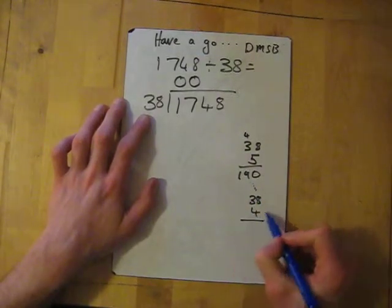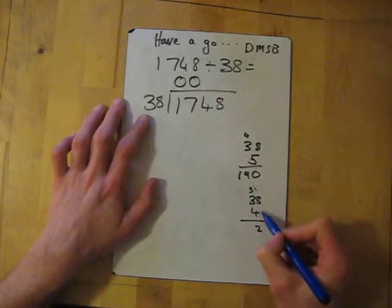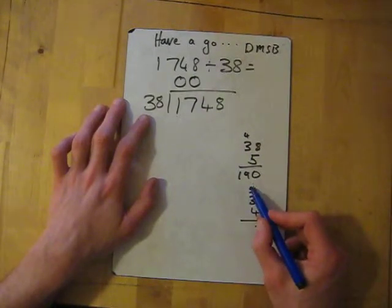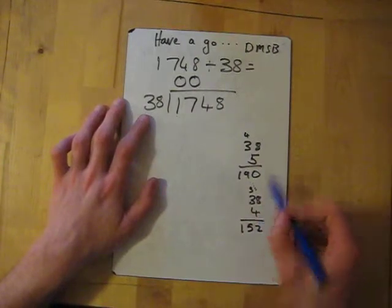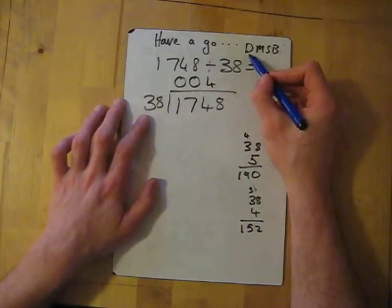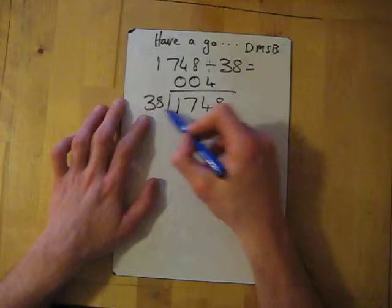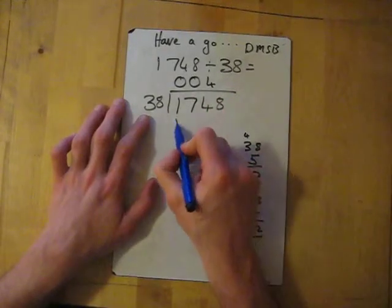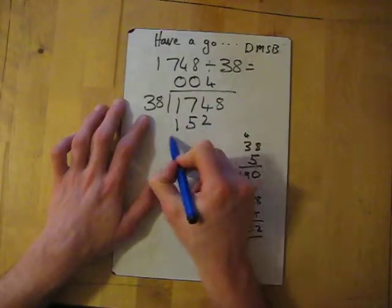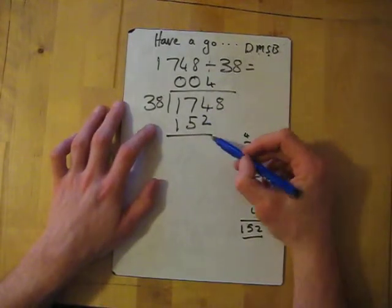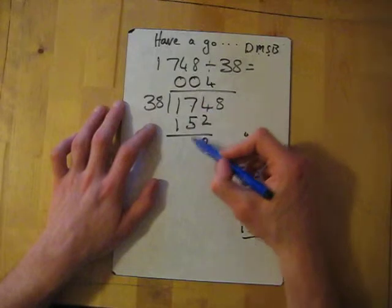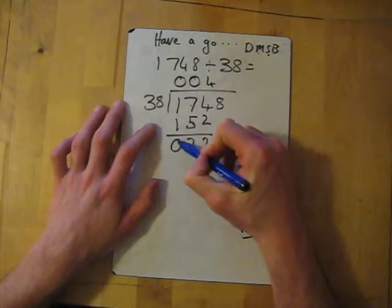So we divided, then we multiply. 4 times 38 which is 152 - write it below. And then we subtract. 4 take away 2 is 2, 7 take away 5 is 2, 1 take away 1 is 0.